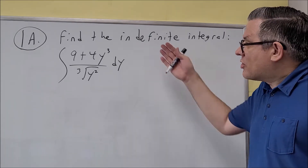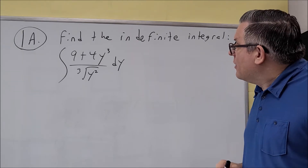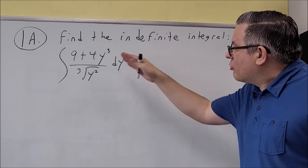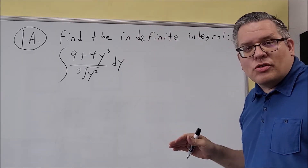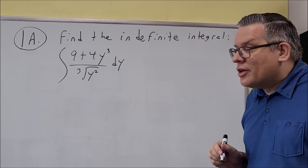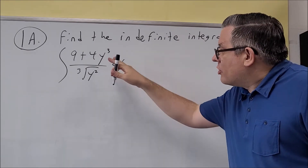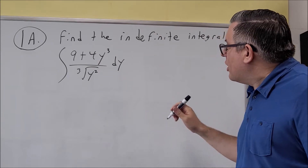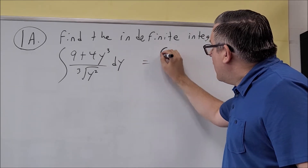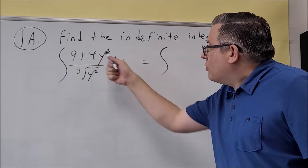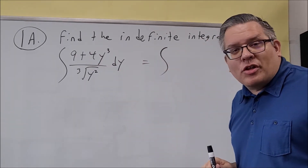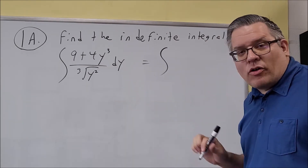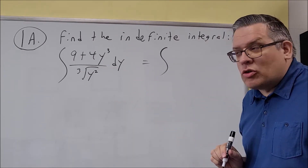So with that, let's get started with problem 1A. We're going to find the indefinite integral. This is going to require you to use the inverse power rule. The best way to do this is to first break this down — we're going to go ahead and divide everything on top by what you have on the bottom. We want to get it all down into just some power so that way we can use the inverse power rule.